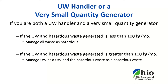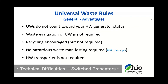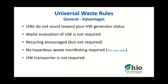If a facility is both a universal waste handler and a very small quantity generator of hazardous waste — meaning they generate 100 kilograms or less per month of hazardous waste, or 1 kilogram or less per month of acutely hazardous waste — that handler may take advantage of a few options. If the universal waste and hazardous waste generated is less than 100 kilograms per month, they can manage all waste as hazardous waste. If greater than 100 kilograms per month, they can manage the universal waste and hazardous waste separately. Universal waste handler status levels should not be confused with hazardous waste generator status levels — they are two different things.